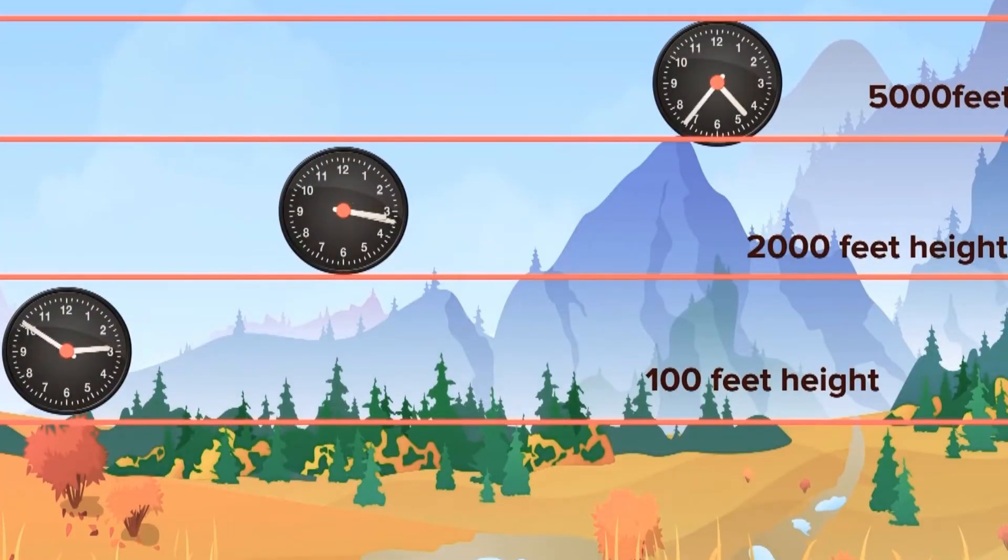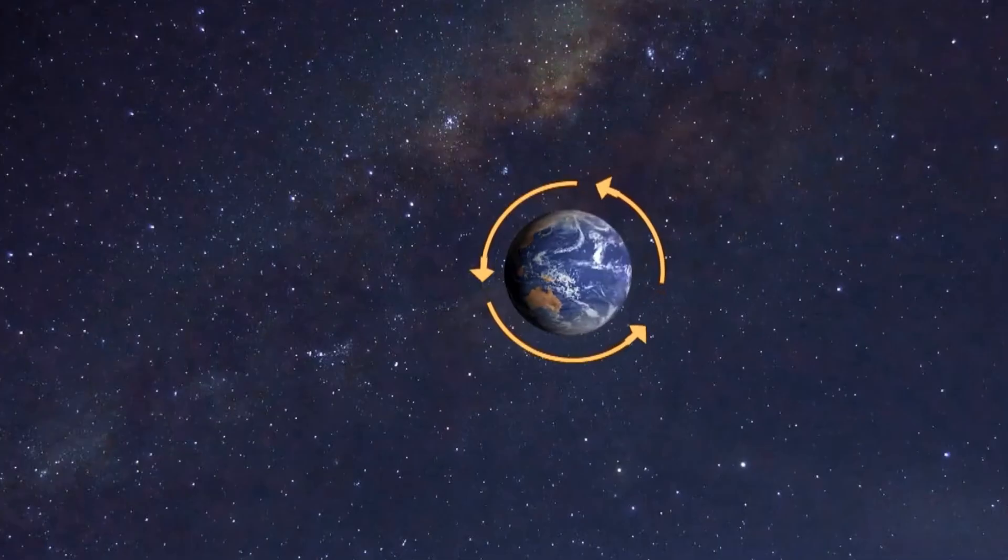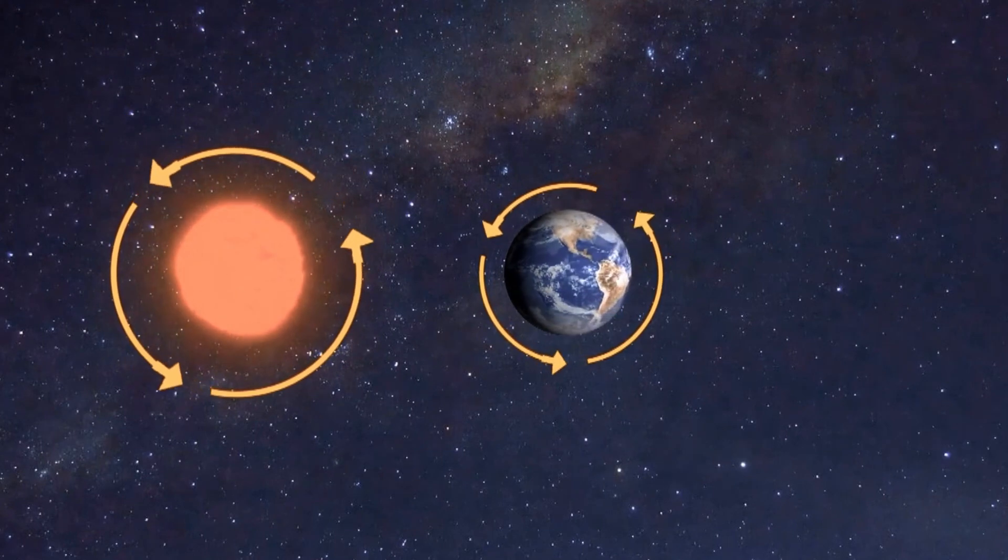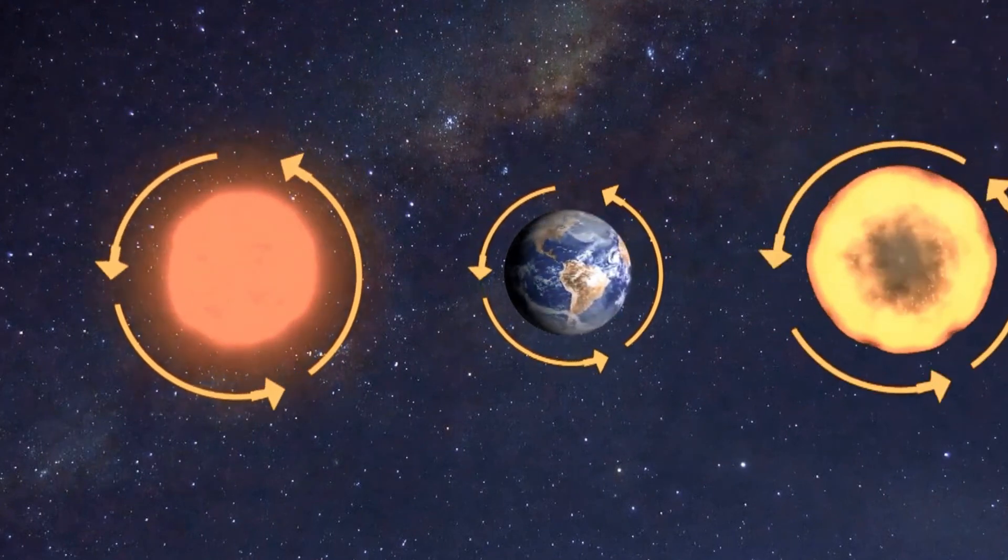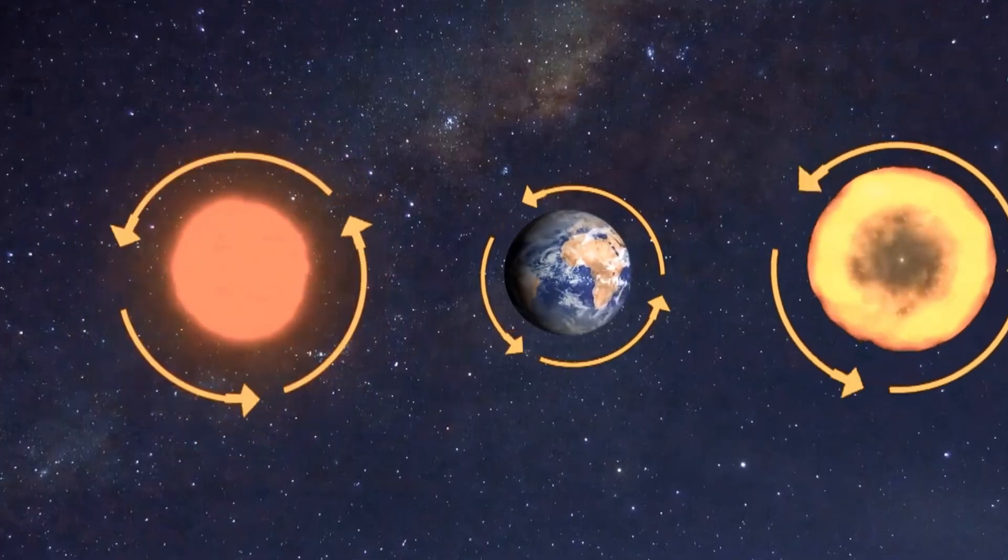Earth bends spacetime, and the Sun does too, thanks to its mass. But near a black hole, this curvature becomes so extreme that space and time start to break down. At this point, the spacecraft could actually start moving backward in time.